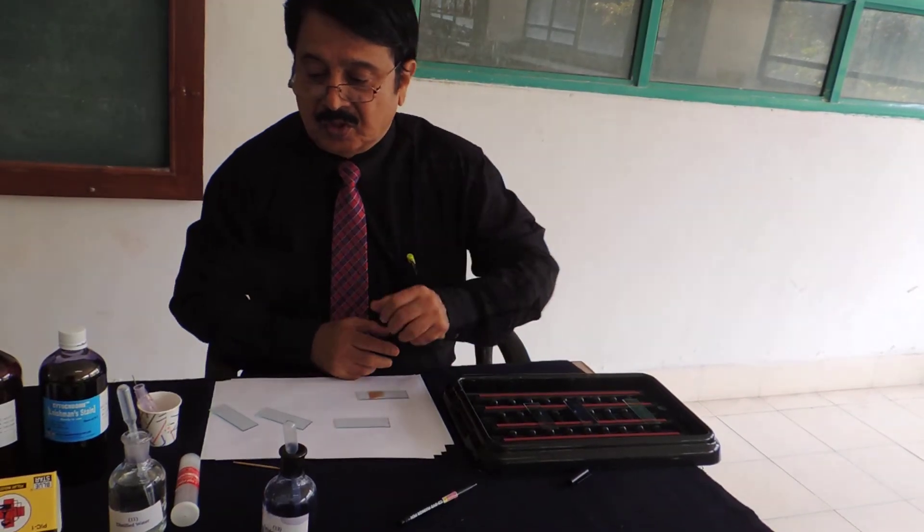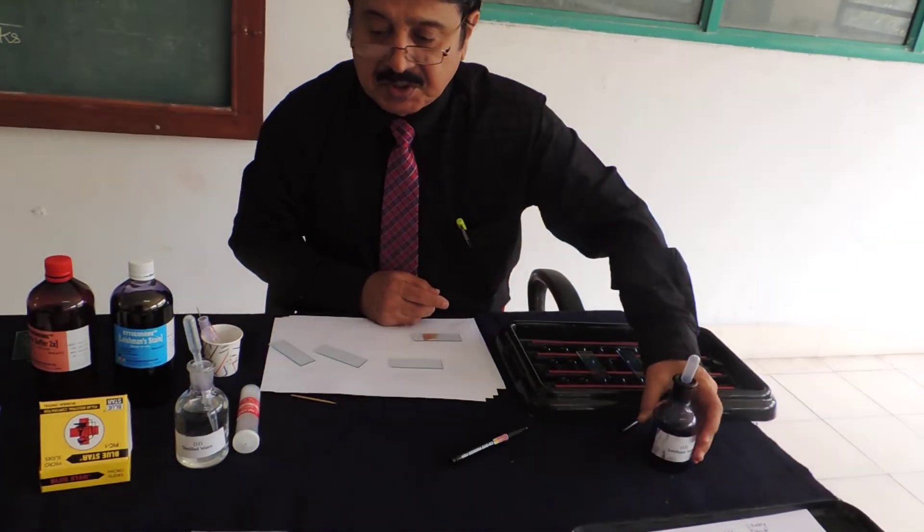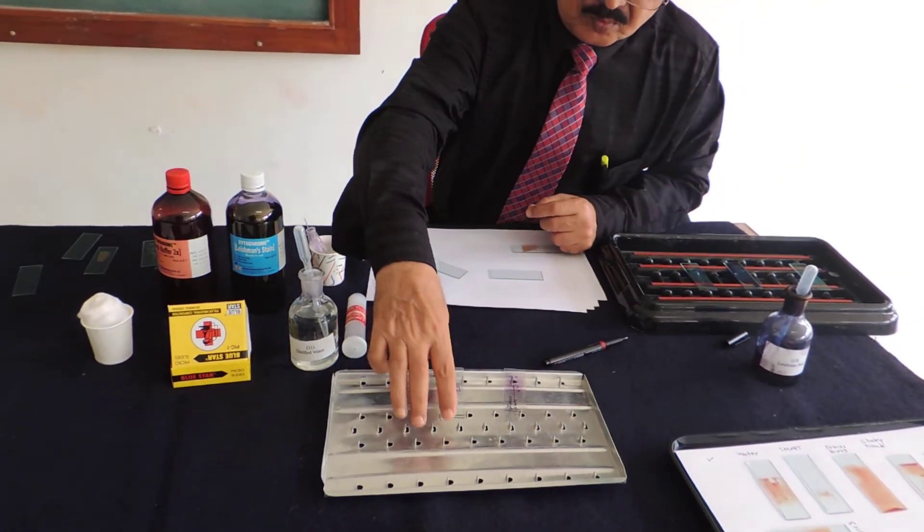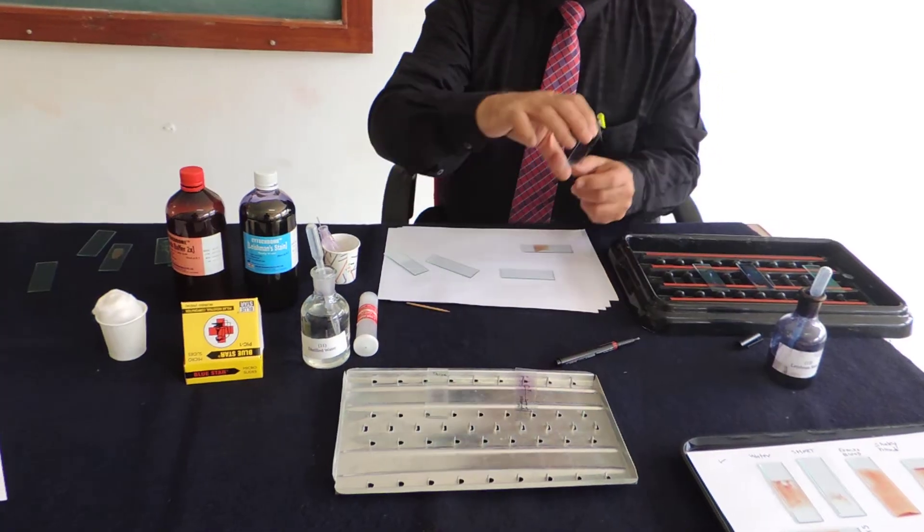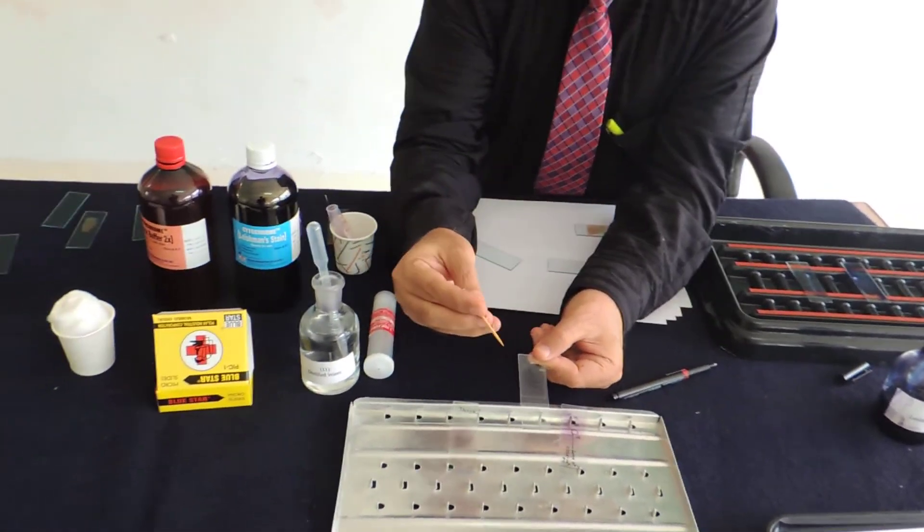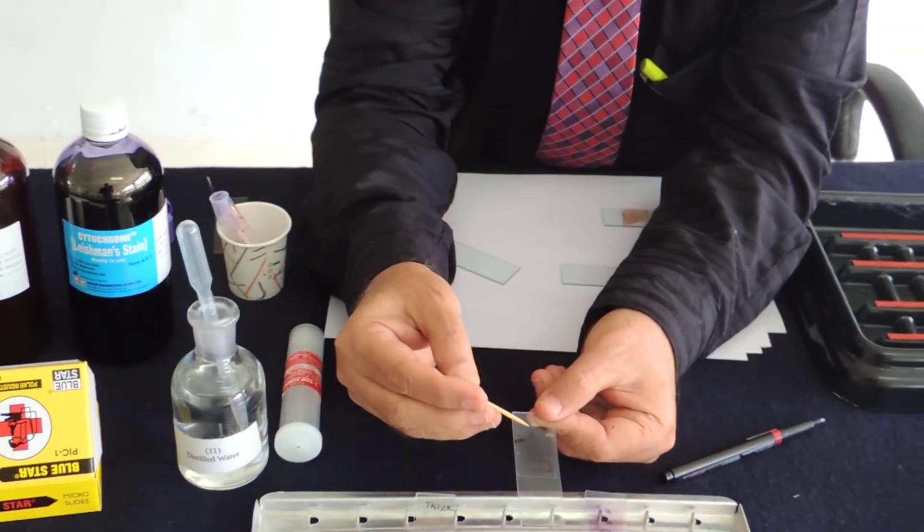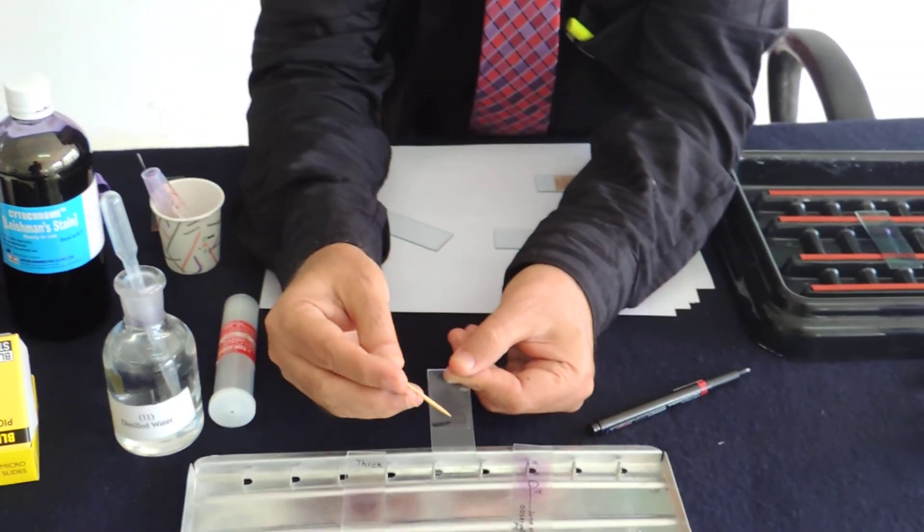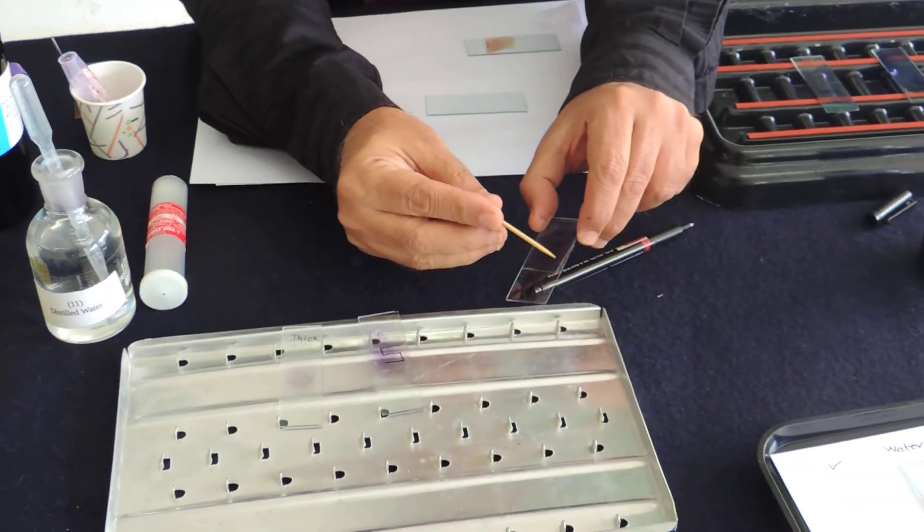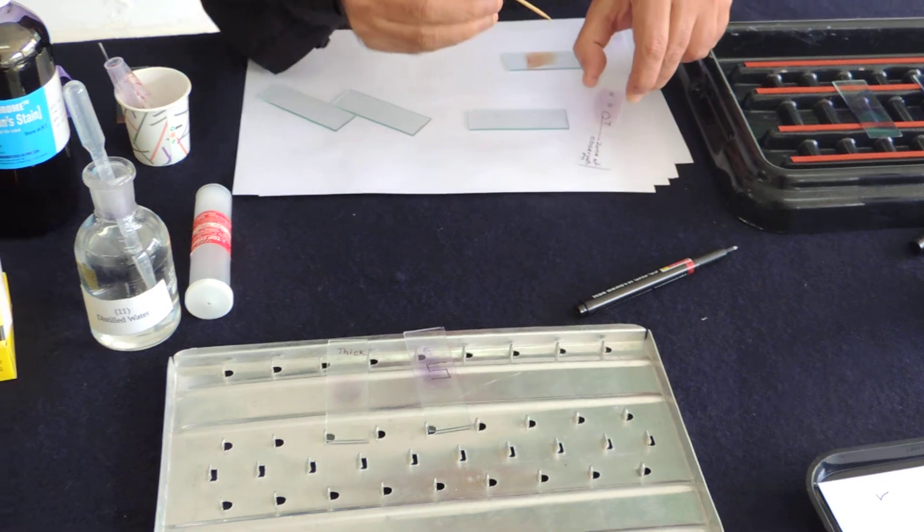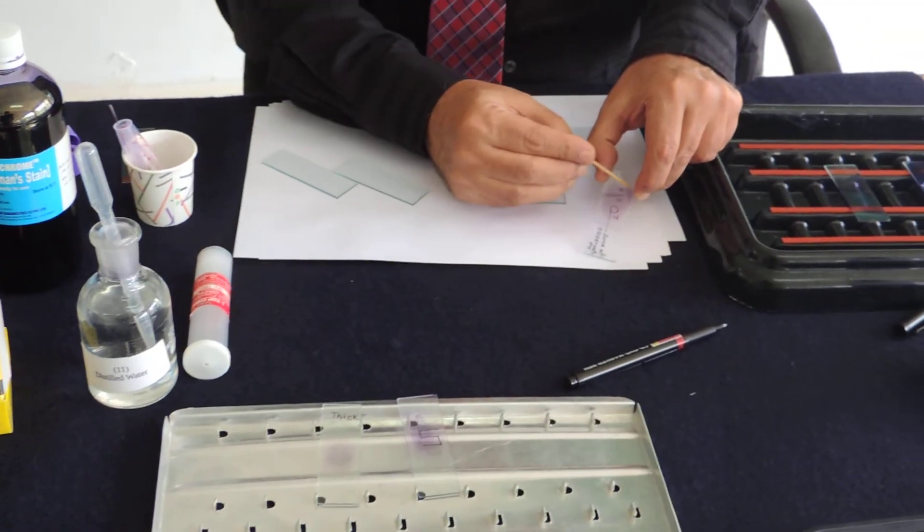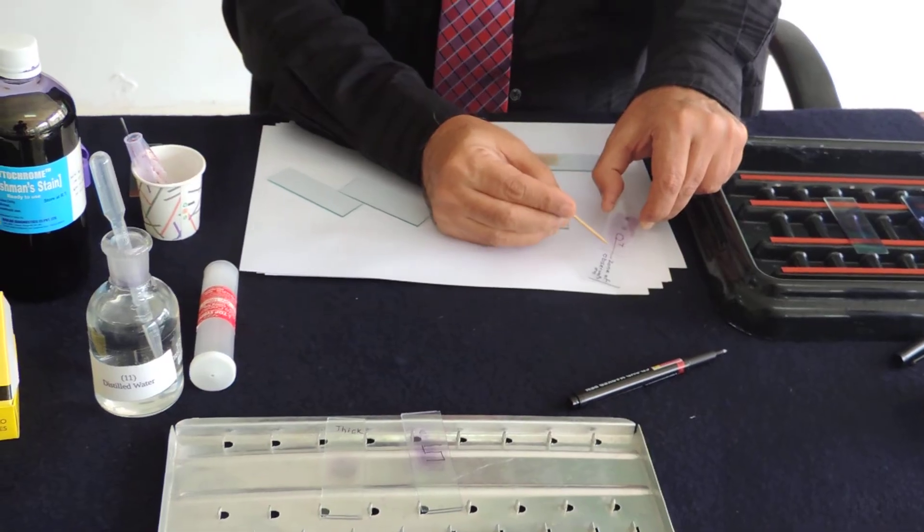So what you get after the staining is something like this. Now this is the smear which has got three parts: head, body and tail. Now the better thing is here. Now this is the tongue shaped smear covering about two thirds of the slide. Tongue shaped smear covering two thirds of the slide.